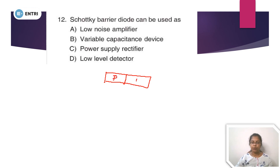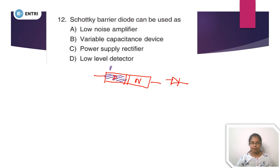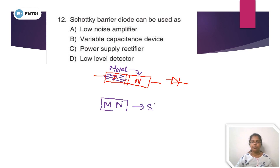We have a PN junction semiconductor diode — that is the normal PN junction diode and its symbol. The Schottky barrier diode is different: it is a combination of metal and N-type semiconductor, not P type and N type.